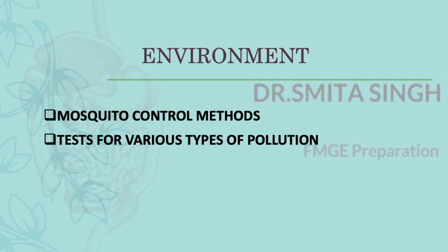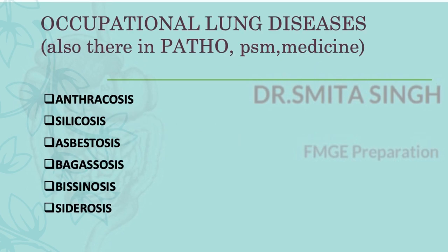In environment, focus on two key things: mosquito control methods — important because malaria, dengue, and other vector-borne diseases are mosquito-borne — and tests for various types of pollution. Occupational lung diseases are also important and overlap with pathology and pulmonology in medicine, so you cannot afford to miss them. These are easy marks, and missing them after not reading once would be very disheartening.